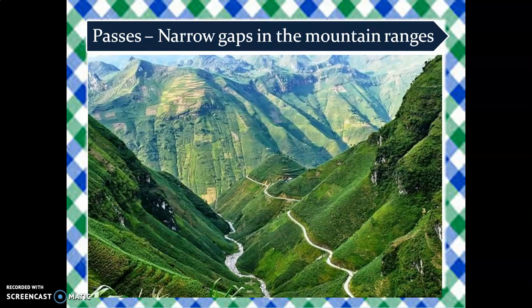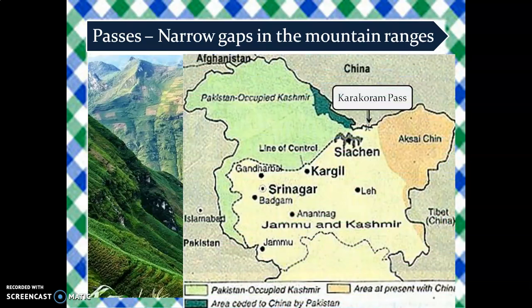Passes are narrow gaps in the mountain range. In ancient times, traders and invaders entered India through these passes. Khyber Pass, which is now in Pakistan, and the Karakoram Pass in Jammu and Kashmir are the highest and most difficult passes.